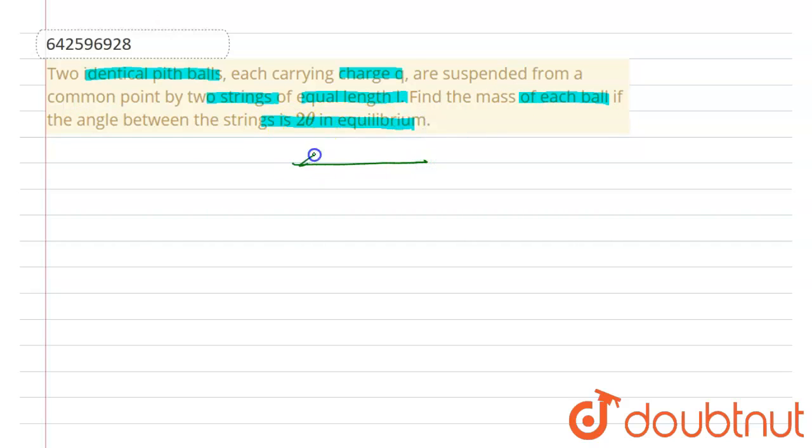So in this problem we have a string connected to pith ball, and this is in equilibrium condition and the angle between them is 2θ. From the vertical, this angle will be θ and this angle will be θ. Now the length of the string is l, and this is mass and this is charge. We have to find the mass.